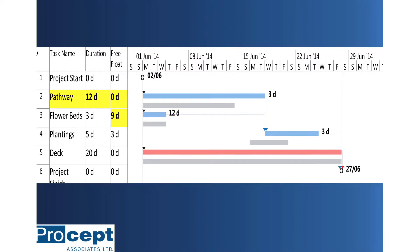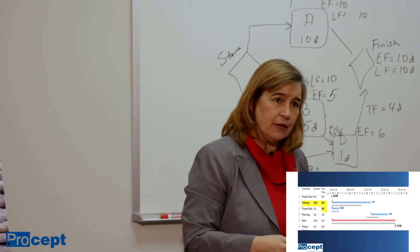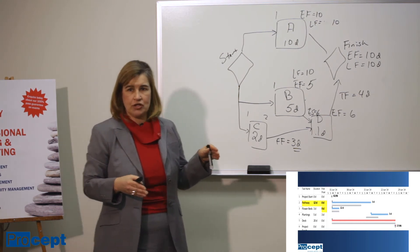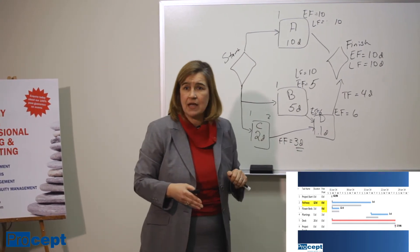If you delay pathway, which had zero free float, you can see the immediate follow-on effect on plantings. So if a task has zero free float, we have to ensure that resource coordination takes place and good communication if that predecessor task slips.